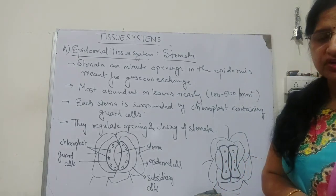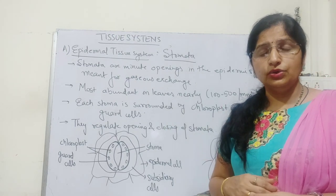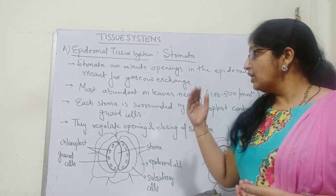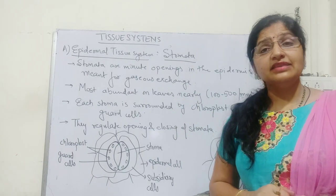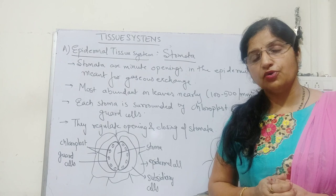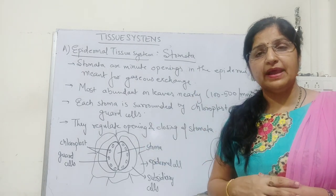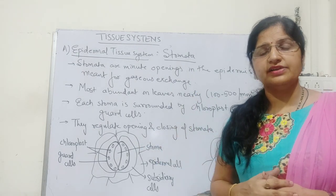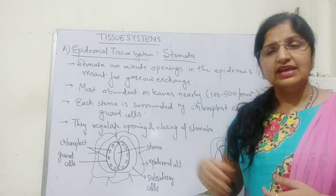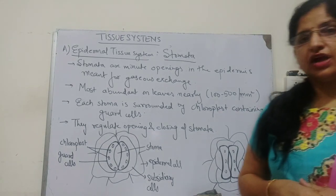Along with cuticle, silica deposits, and the stomatal apparatus, there are certain epidermal appendages coming out from the epidermis — root hairs arising from root epiblema and trichomes arising from stem epidermis.